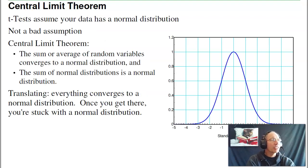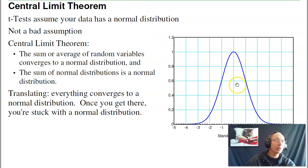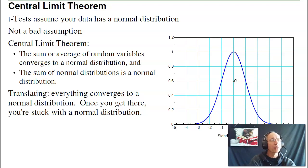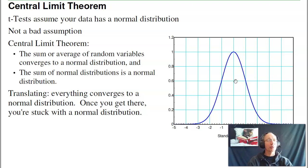The heart of a t-test is the central limit theorem. The t-test assumes all data has a normal distribution — that bell-shaped curve you're probably familiar with, seen in grade distributions, heights, weights, speed, and pretty much everything. The reason is the central limit theorem: if you take the average or sum of random variables under some very loose assumptions, you get a normal distribution. Also, a normal plus a normal is still a normal distribution, so everything converges there. In engineering we typically assume everything has a normal distribution — not always right, but usually a pretty good approximation.